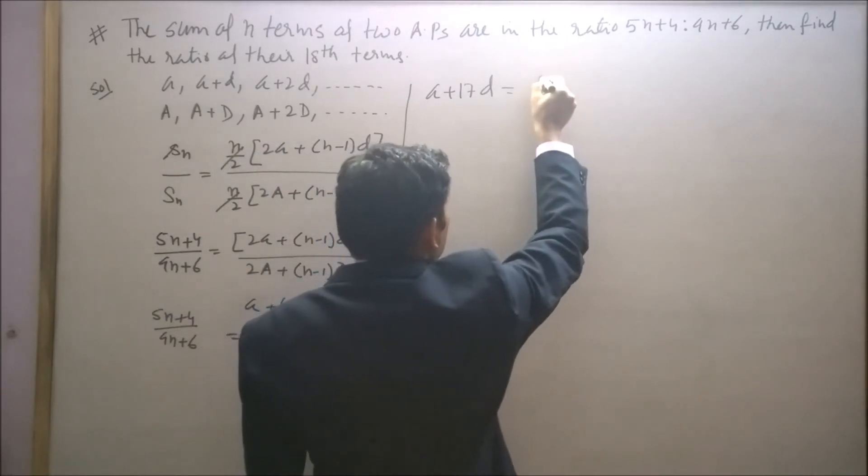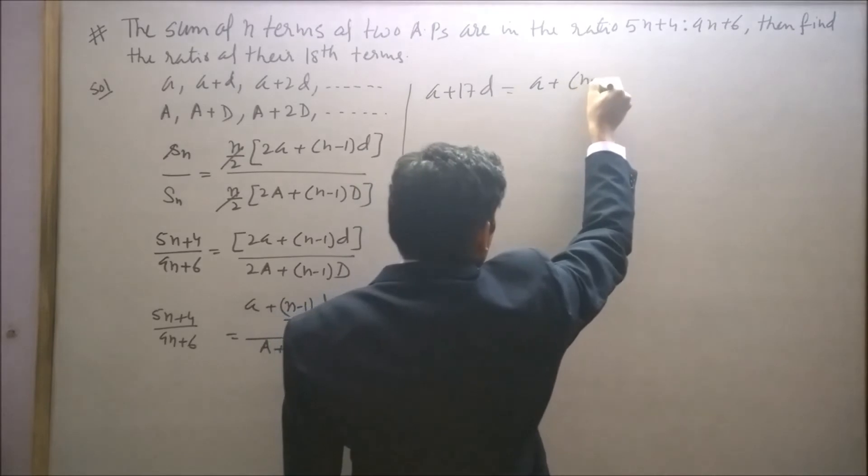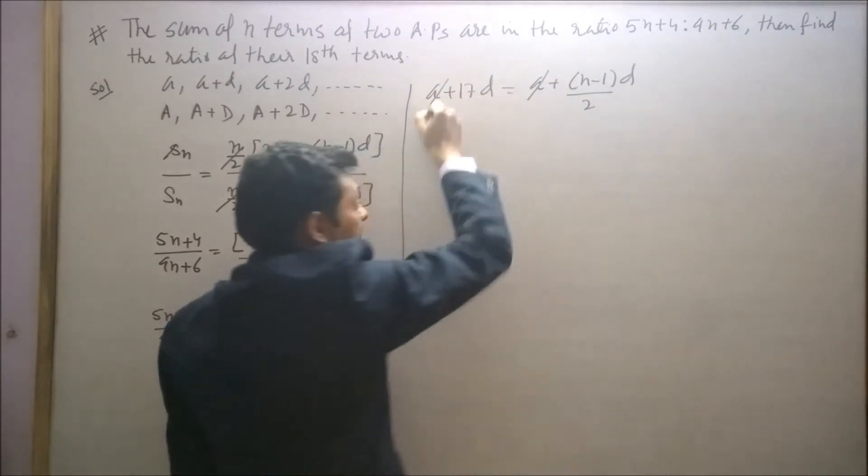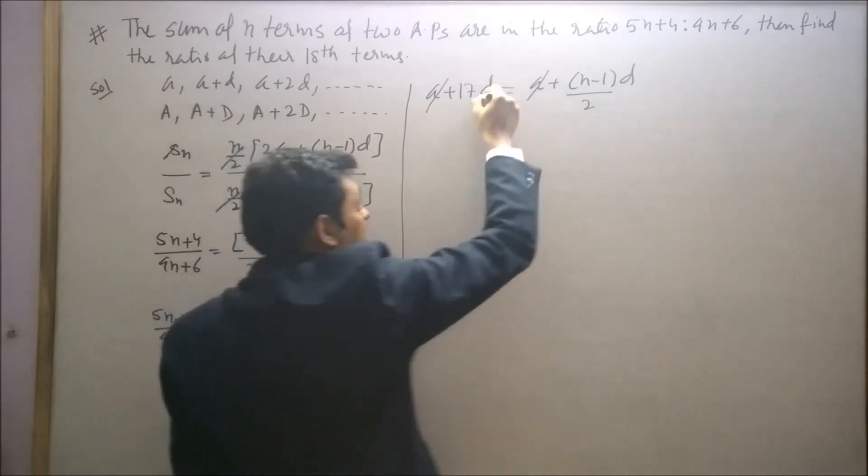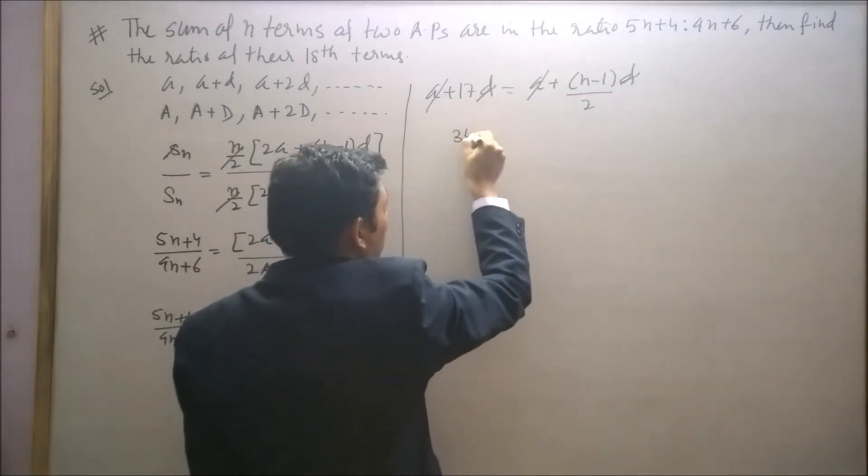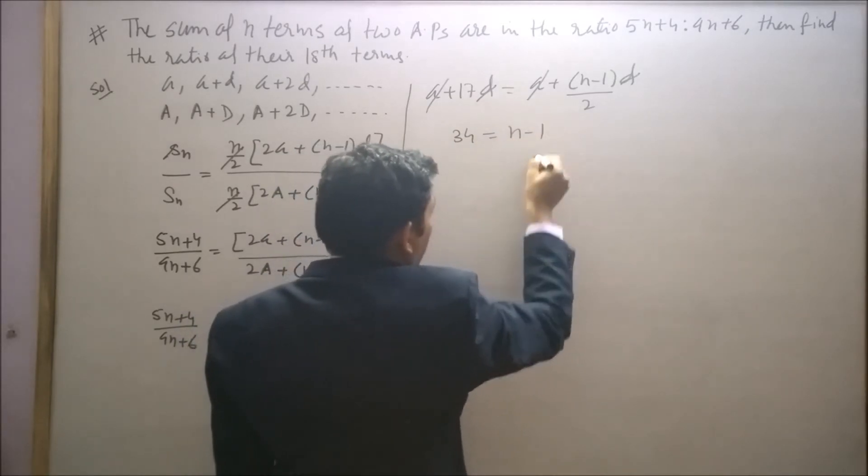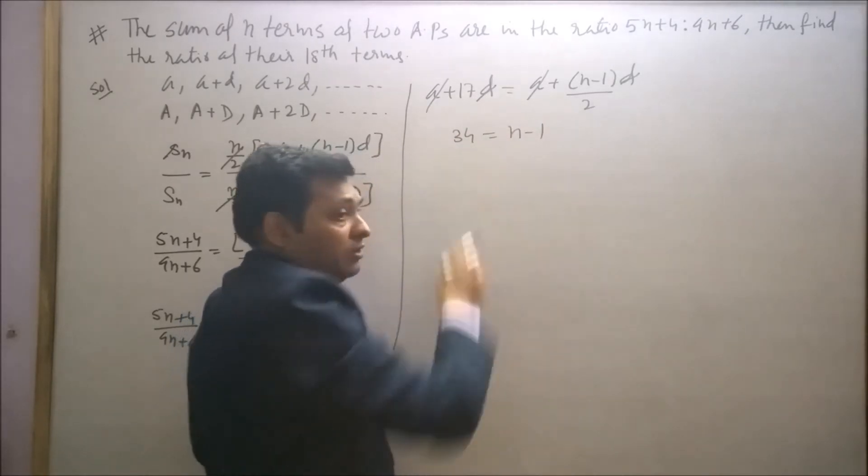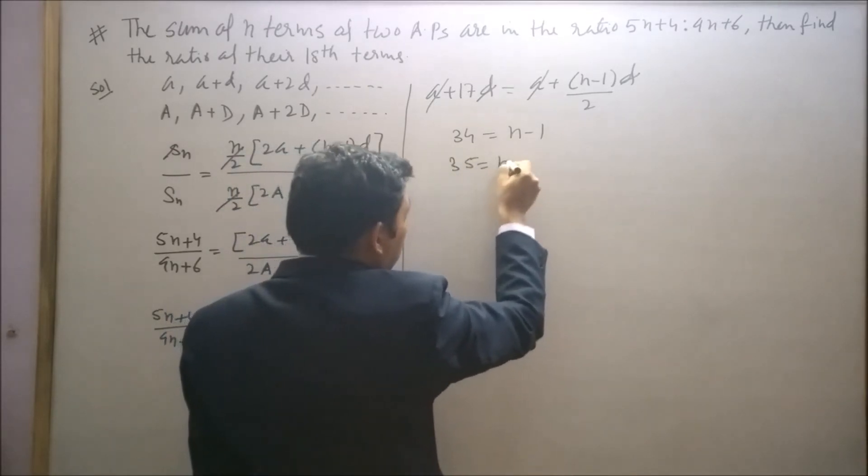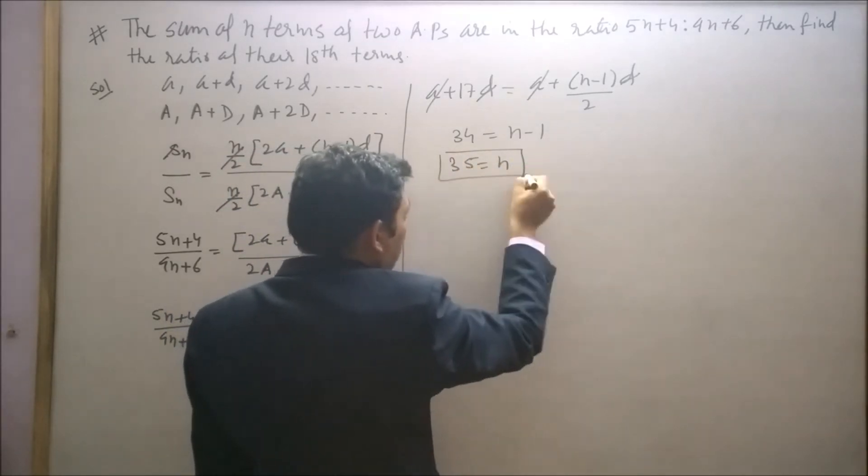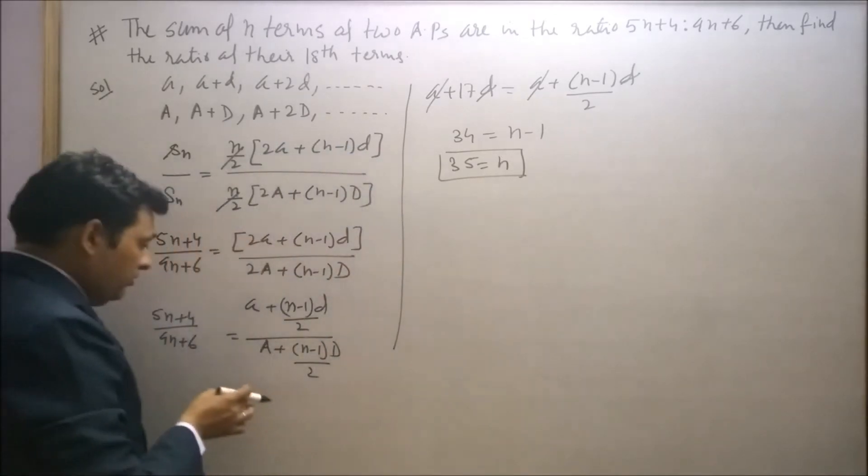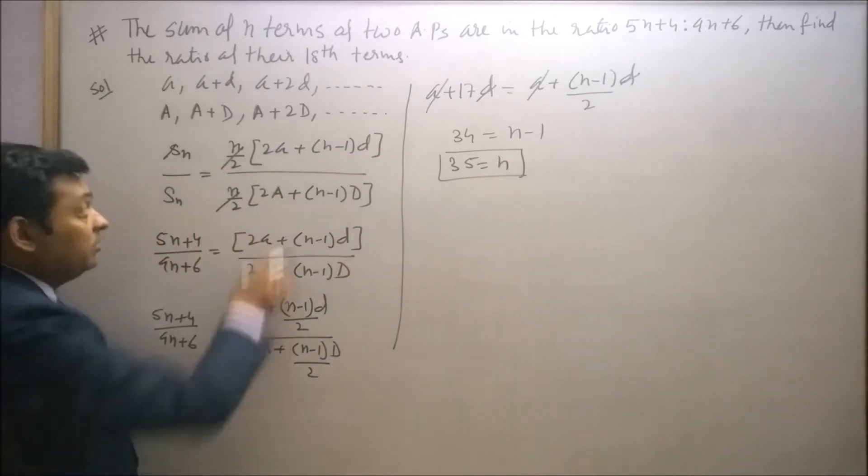Now equate these terms: a plus n minus 1 into d upon 2. A and a will cancel out, d and d will cancel out. 17 equals n minus 1 upon 2. So n minus 1 equals 34. Now transpose minus 1 to the left hand side, this will be 35. So n is obtained as 35.